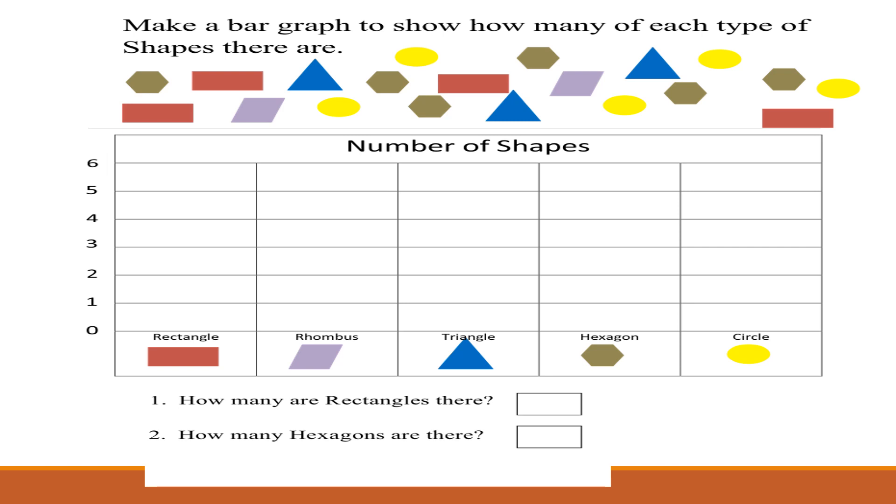So let's count. 1, 2, 3, 4. How many rectangles are there? We have 4 rectangles. So we have to color the 4 boxes above rectangle. Let's do it. Very nice.